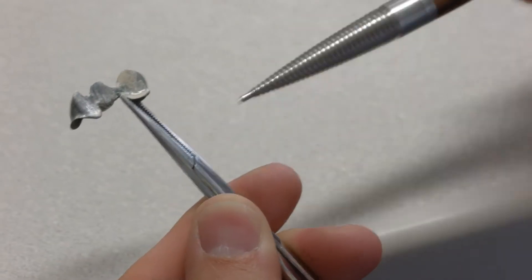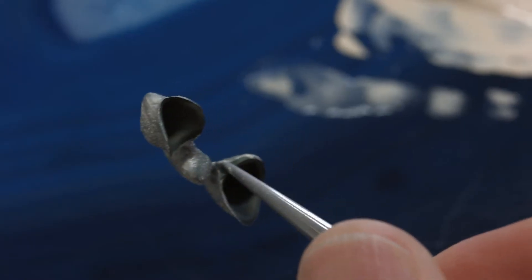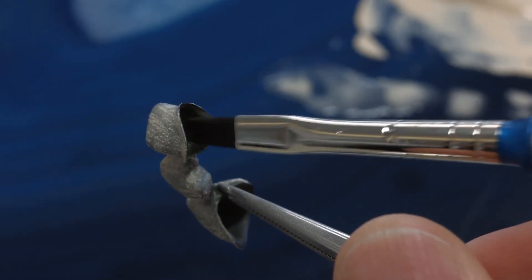It's important to prevent excess opaquer from reaching the inner aspects of the abutment crowns in order to avoid any inaccuracy of fit.